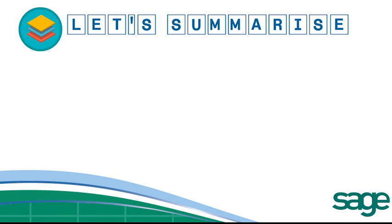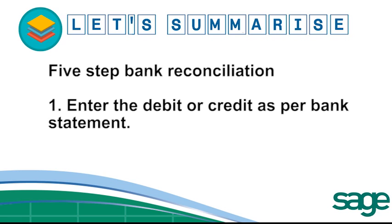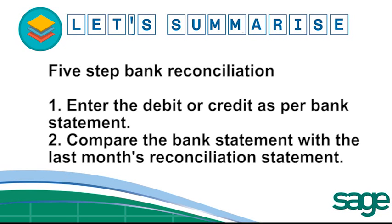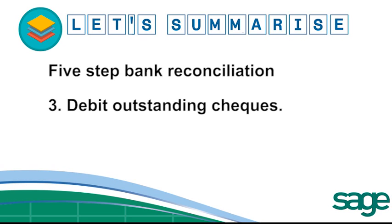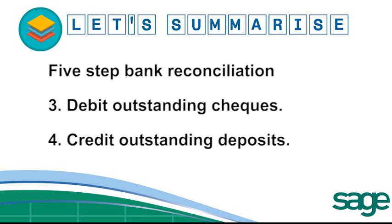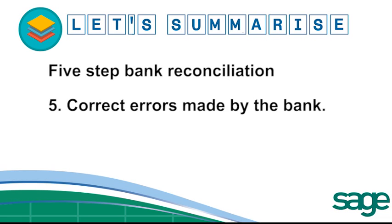Let's summarise with these five easy steps to bank reconciliation. Step one: enter the debit or credit balance as per the bank statement. Step two: compare the bank statement with last month's bank reconciliation statement. Step three: debit outstanding cheques — cheques issued but not presented by closing of bank statement remain in the bank reconciliation until cashed. Step four: credit outstanding deposits — deposits made after closing of bank statement are reflected as credits. Step five: correct errors made by the bank — debit an incorrect credit and credit an incorrect debit. End with a debit or credit balance as per the bank account.